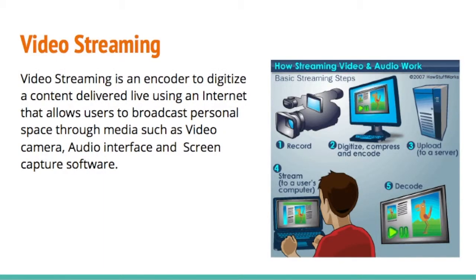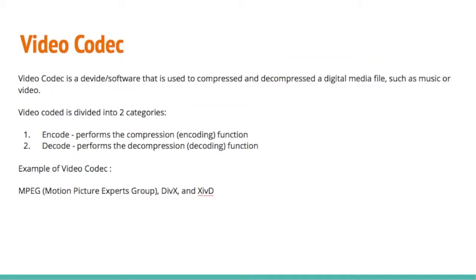Video streaming is a way to digitize content and deliver it live using the internet, allowing users to broadcast through media such as video cameras, audio interfaces, and screen capture software. Video codec is a device or software used to compress and decompress digital media files such as music or video. There are two categories: encoding, which performs the compression, and decoding, which performs the decompression.